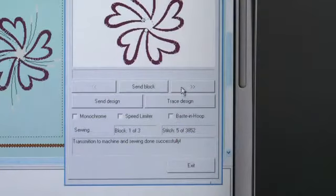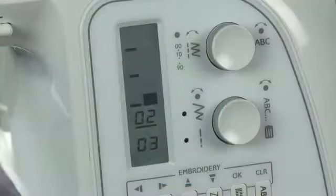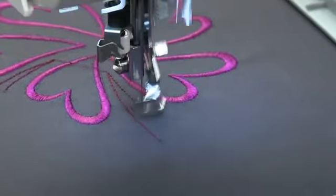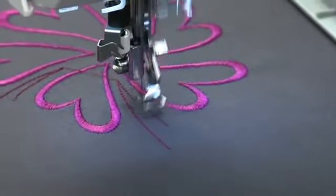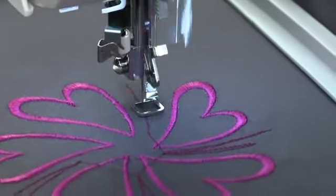To see the next color, click on the forward arrow. The machine LCD panel will now display that color two of three colors is ready to embroider. Change the thread color, then press the start button on the front of the machine to begin stitching color two. Continue this process for all colors.